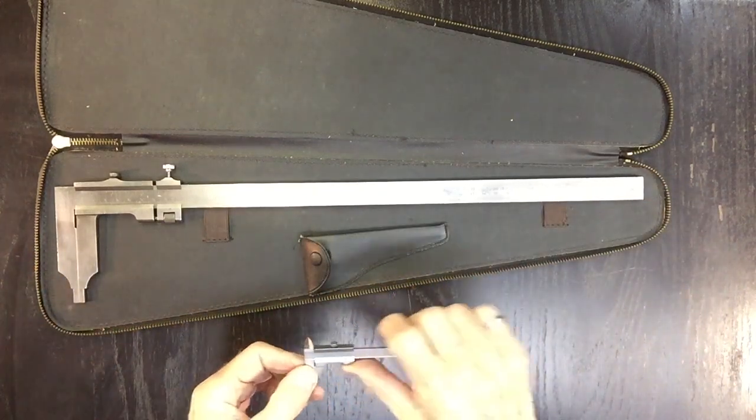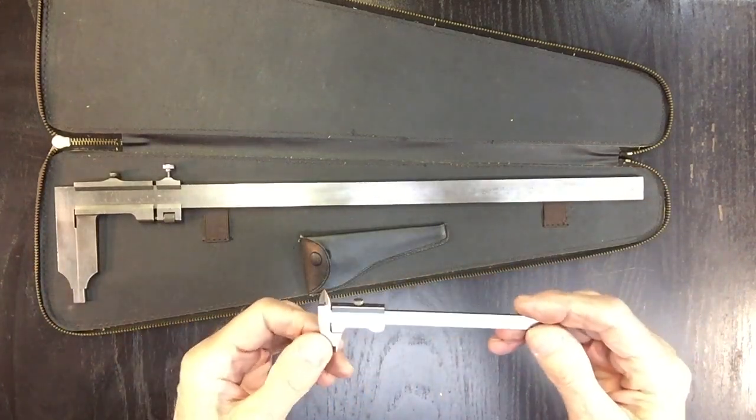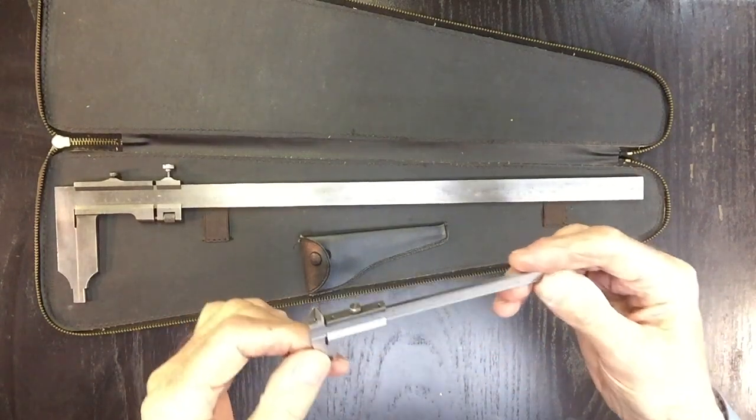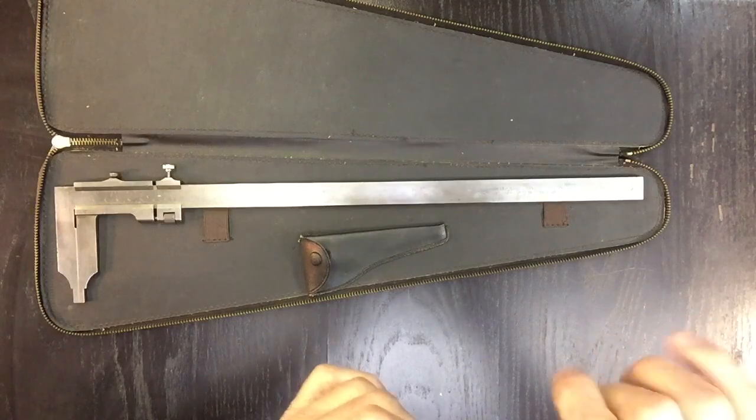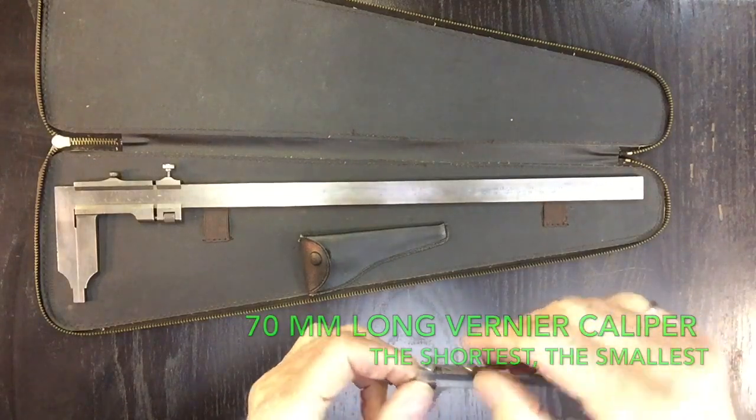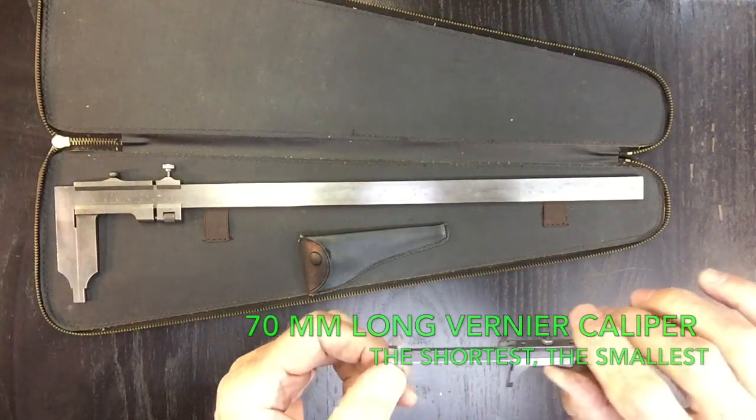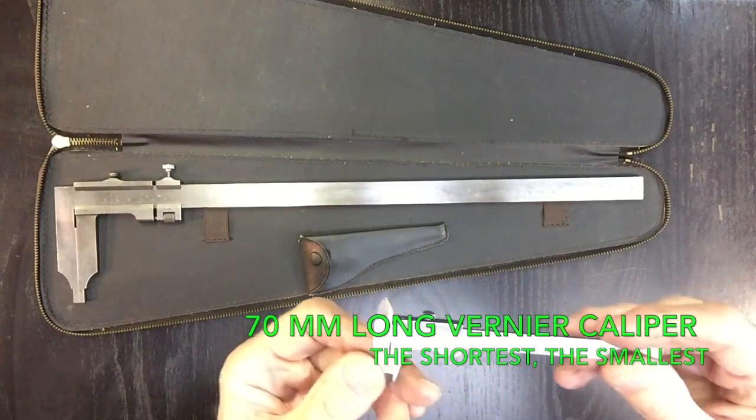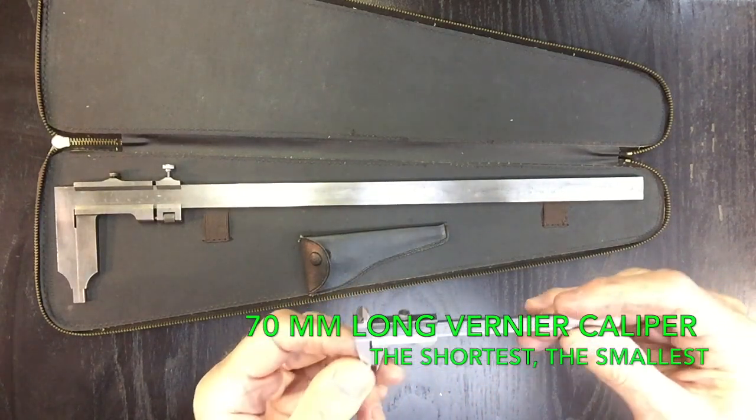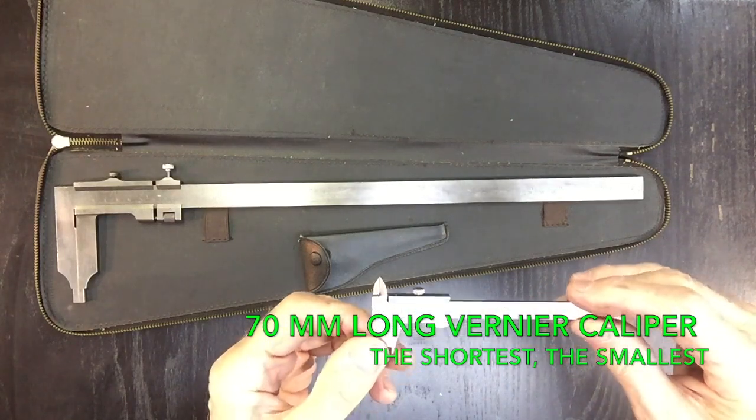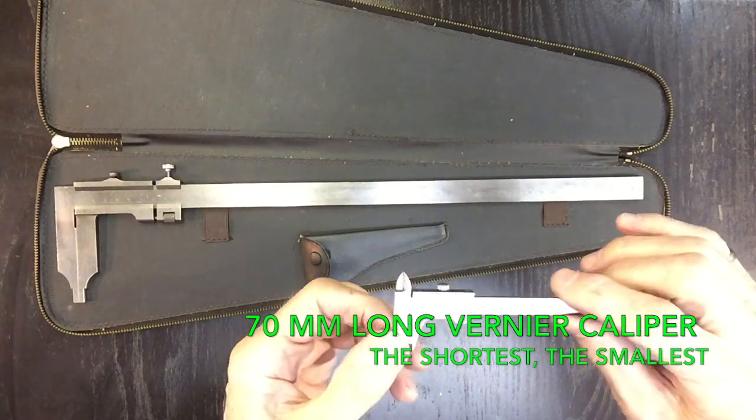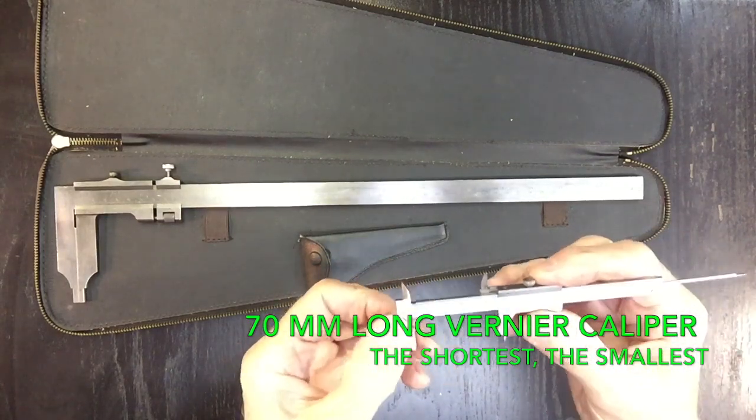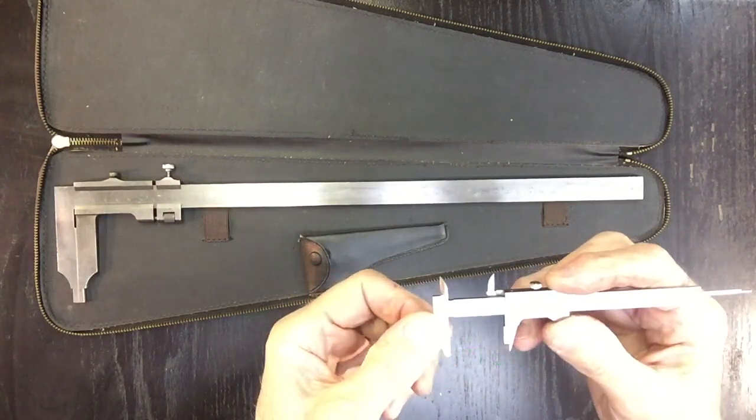This is the smallest one. This is a 7cm. Metric is no problem for me, I use both systems. This is very handy. I bought it in Germany when you have to measure under the mill. There is no room. You still can use this. I use it very often.